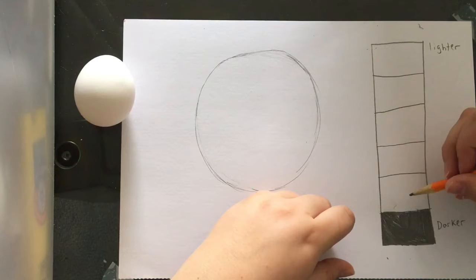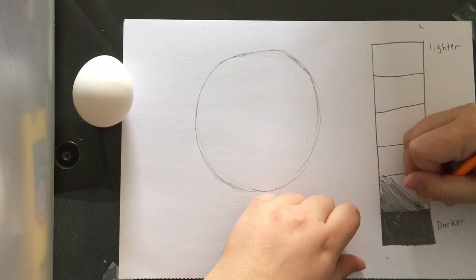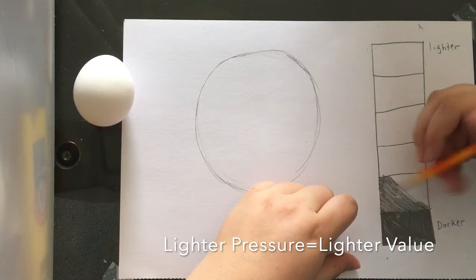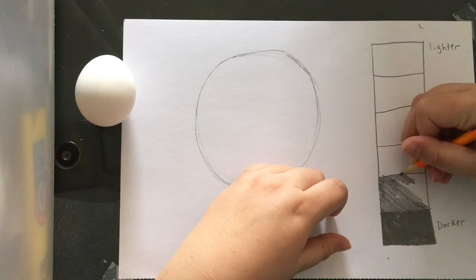Now for the next one, I want it to be pretty dark, but I don't want it to be as dark as the first one. I want there to be a noticeable change. So I'm putting a little bit less pressure with my pencil. I'm filling it in.